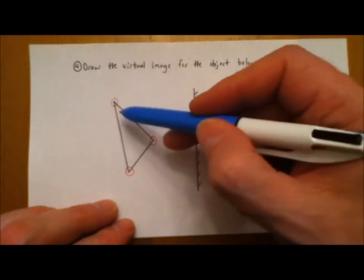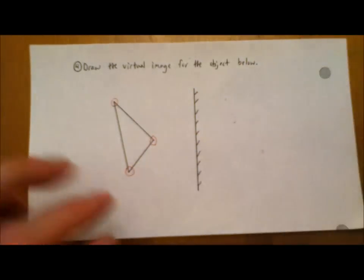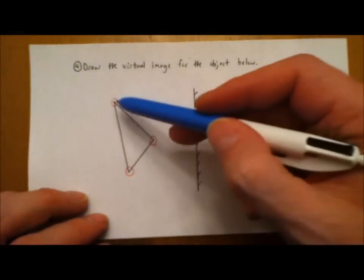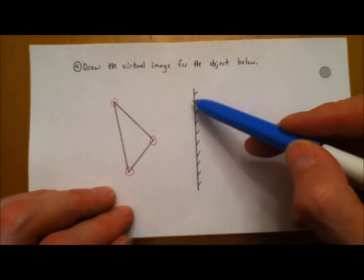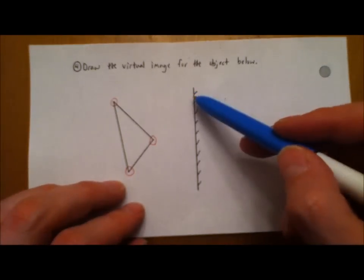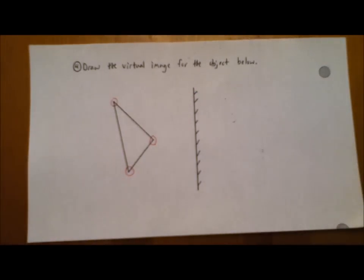What I've already done is circled three significant points that make up this object, a triangle, and we're going to measure the distance from each of those points to the surface of the mirror, and then measure from the surface of the mirror behind the mirror to figure where the image of the triangle is actually found.